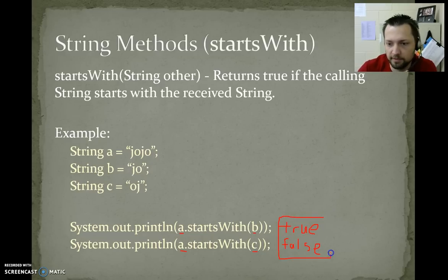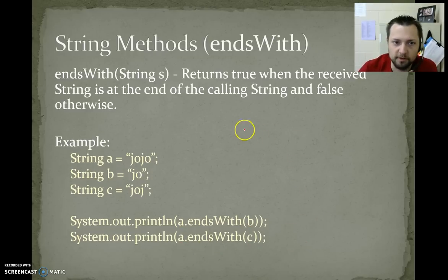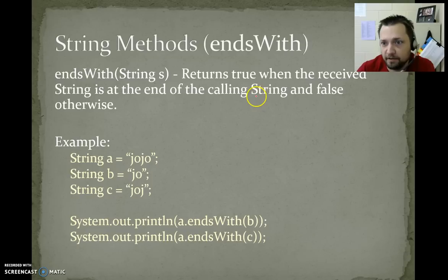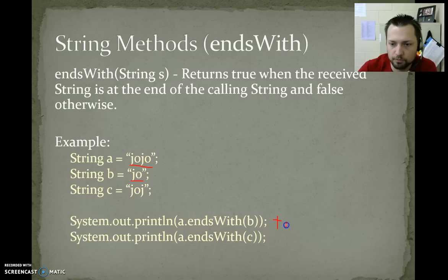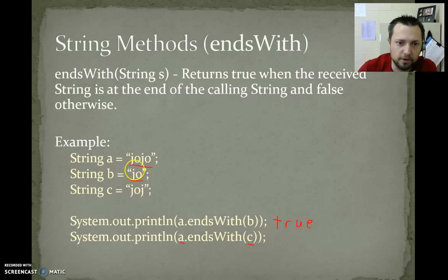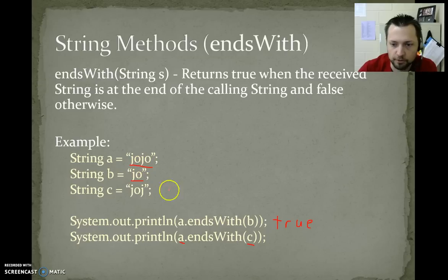endsWith — returns true when the received string is at the end of the calling string and false otherwise. So we have "JoJo". A.endsWith(b) — does "JoJo" end with "Jo"? Yes, so we get true. Does a end with c? Does "JoJo" end with "JoJ"? No, it ends with "ojo" — so this would be false.